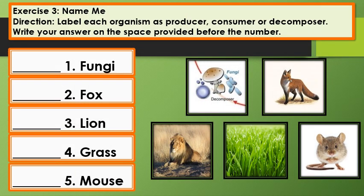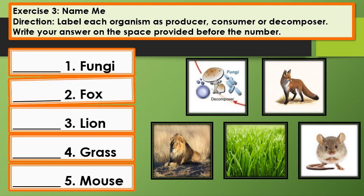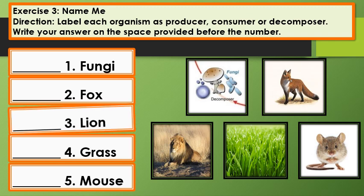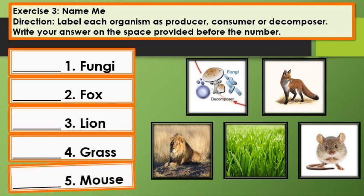Exercise 3: Name Me. Label each organism as producer, consumer, or decomposer. Write your answer in the space provided before the number. Number 1: Fungi. Number 2: Fox. Number 3: Lion. Number 4: Grass. Number 5: Mouse.